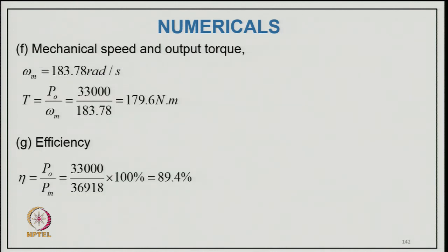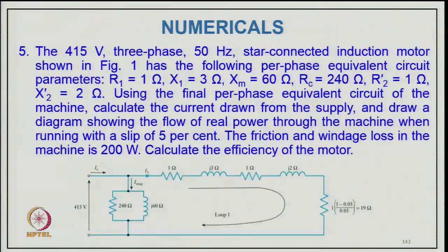Mechanical angular speed ωm = 2π×Nr/60 = 183.78 rad/s; output torque T = Po/ωm = 33000/183.78 ≈ 179.6 N·m. Efficiency η = Po/Pin = 33000/36918 ≈ 89.4%.